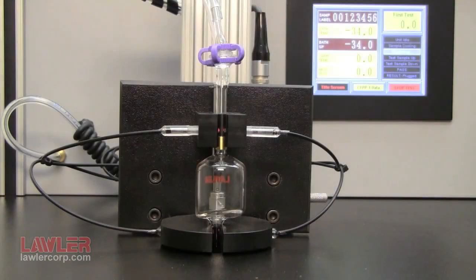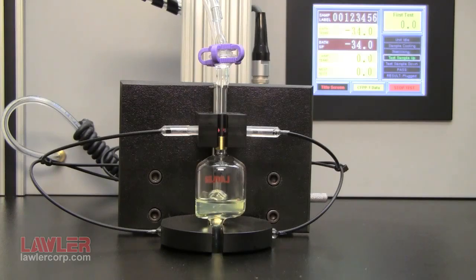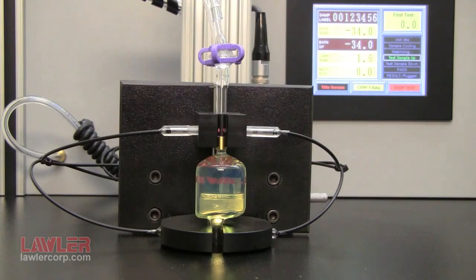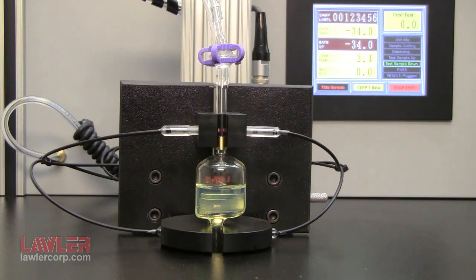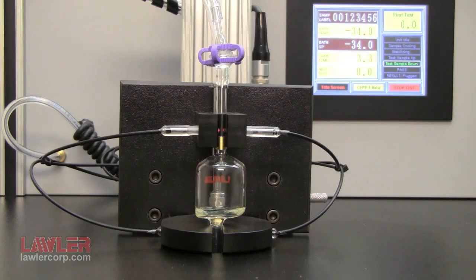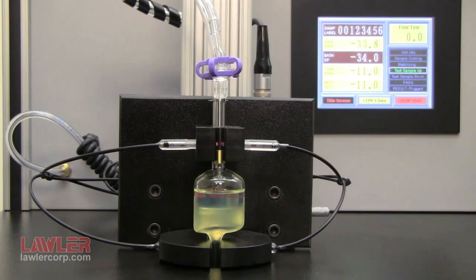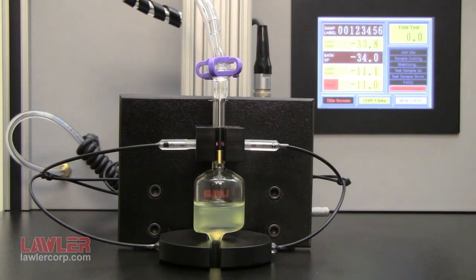The sample pulled under vacuum travels through the 45-micron filter held in a brass filter assembly into the pipette above the test jar. Optical sensors detect sample movement. The controller measures the time to fill the 20 milliliter pipette. Testing is repeated at each 1 degree C drop in sample temperature. The test ends when time exceeds 60 seconds, or sample fails to flow back into the test jar because of filter plugging.